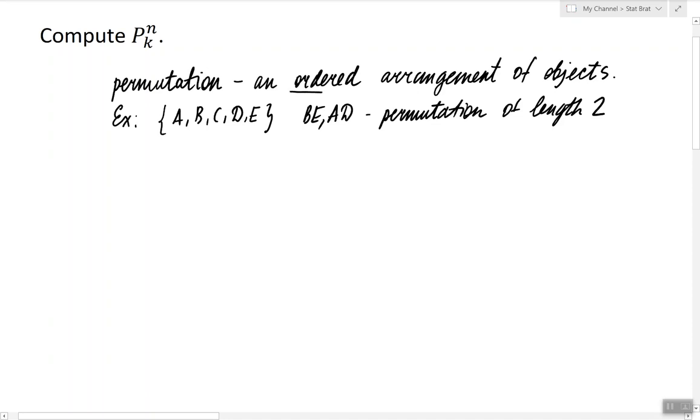What ordered arrangement means is that BE is not the same as EB. So those will be two different permutations of length 2. This allows us to create many permutations of length 2 out of five available objects.